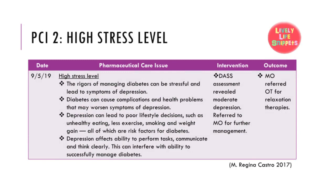The second issue was a high stress level. The rigors of managing diabetes can be stressful and lead to symptoms of depression. According to the National Institute for Health and Clinical Excellence (NICE), people diagnosed with a chronic physical health problem such as diabetes, heart disease, and cancer are three times more likely to be diagnosed with depression than people without these physical health problems. Diabetes can cause complications and health problems that may worsen symptoms of depression. Depression can lead to poor lifestyle decisions such as unhealthy eating, less exercise, smoking, and weight gain, all of which are risk factors for diabetes. Depression also affects the ability to perform tasks, communicate, and think clearly, interfering with the ability to successfully manage diabetes. The patient was referred for a Depression Anxiety Stress Scales (DASS) assessment. The result revealed moderate depression, and subsequently the patient was referred to a medical officer for further management. The medical officer referred the patient to occupational therapy for relaxation therapies.